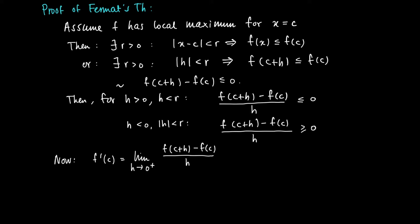And we know that the quotient is smaller than 0, so the limit of h to 0 plus is also smaller than the limit of h to 0 plus of 0, and of course this is a constant function which equals 0.